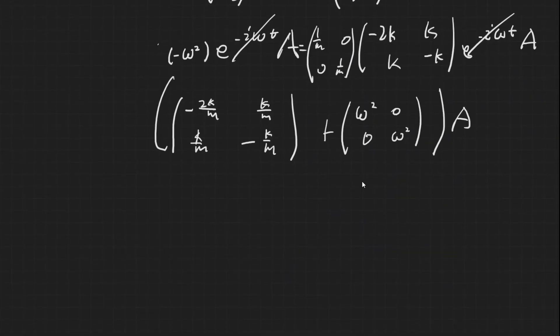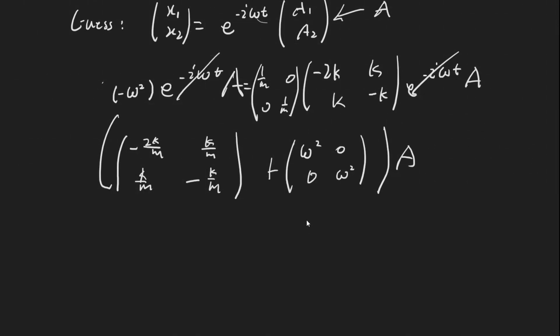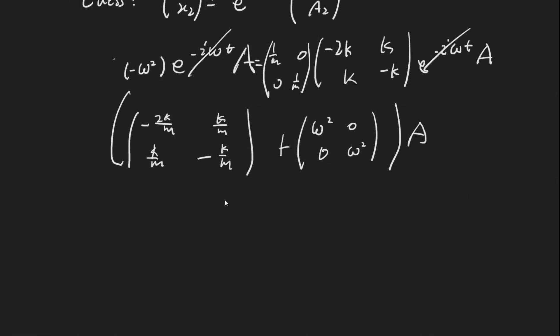And it turns out the general solution to this is going to be when the determinant of the added matrix is 0. So let's find the determinant of this, and that's going to be omega squared minus 2k over m times omega squared minus k over m is equal to k squared over m squared.